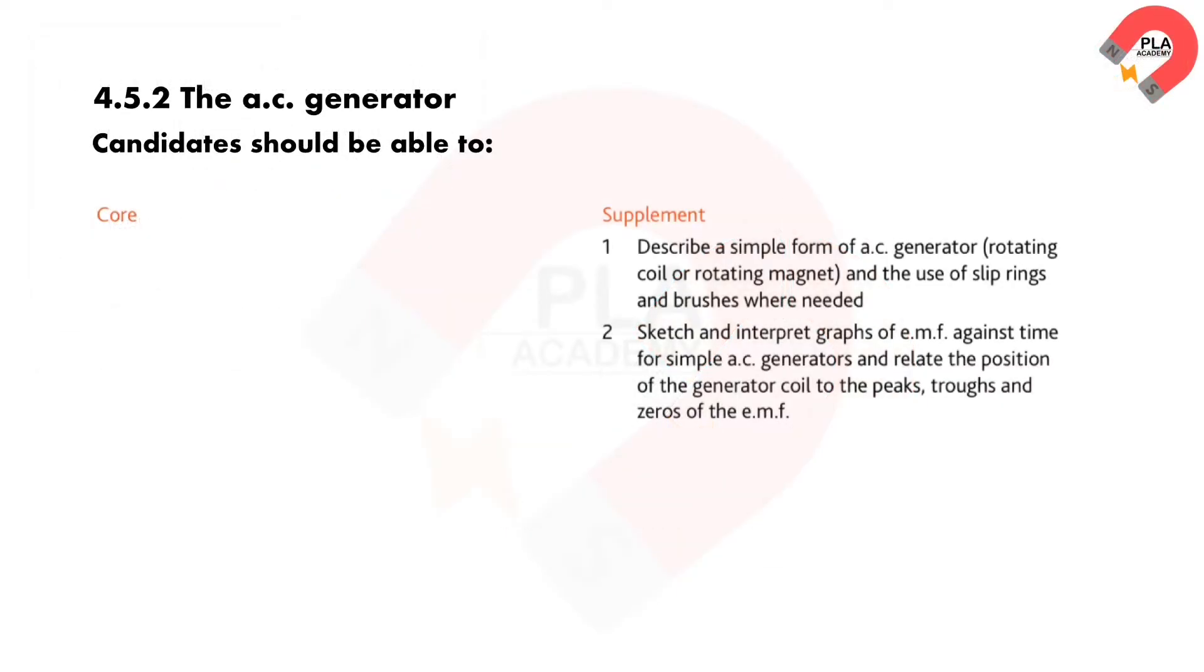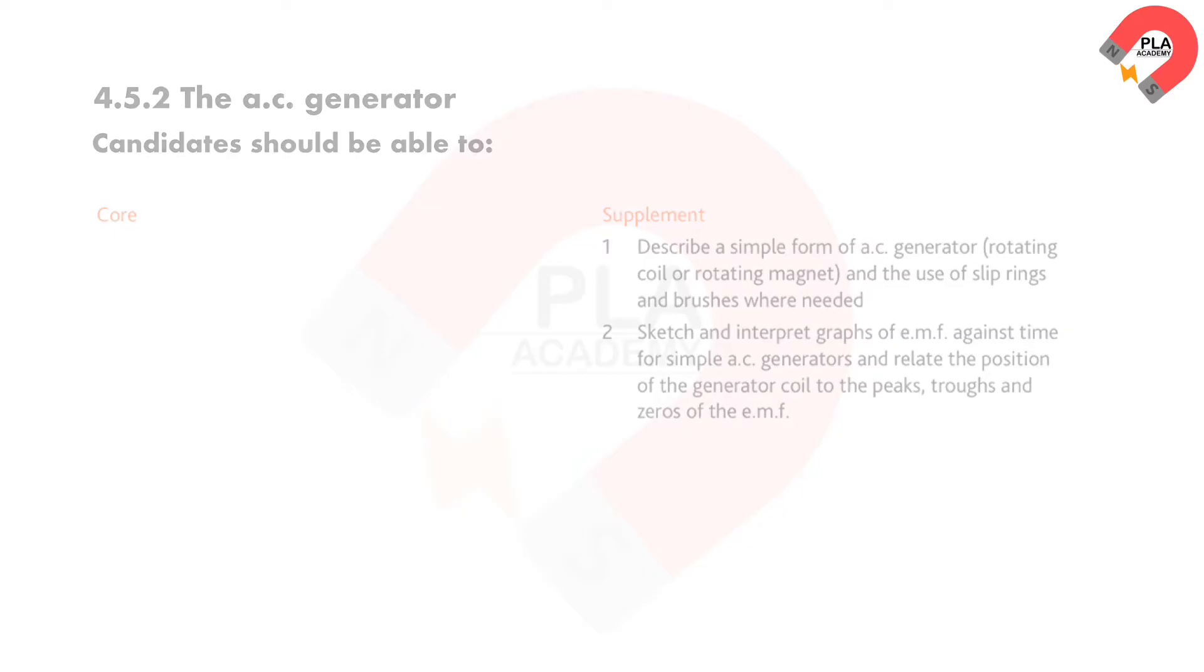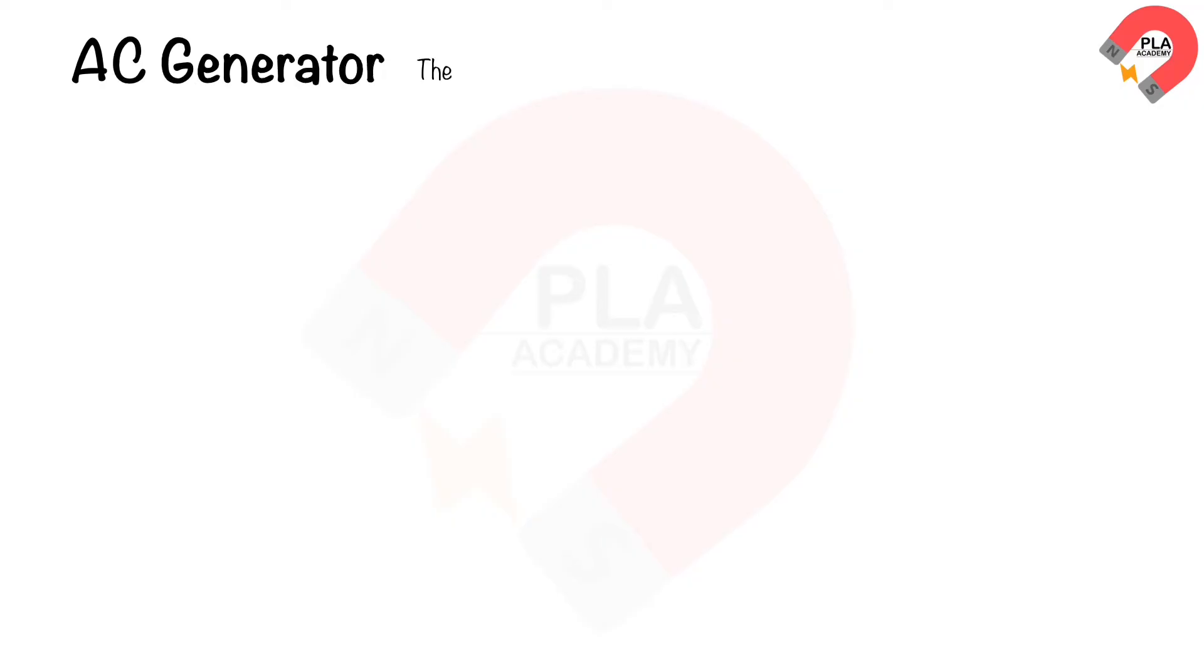Candidates are expected to have a thorough understanding of the syllabus details outlined in the accompanying figure. The AC generator is a device that converts kinetic energy into electrical energy. It is used in power stations to generate electricity that is transmitted to houses and industries.